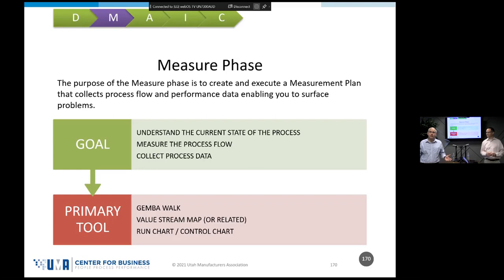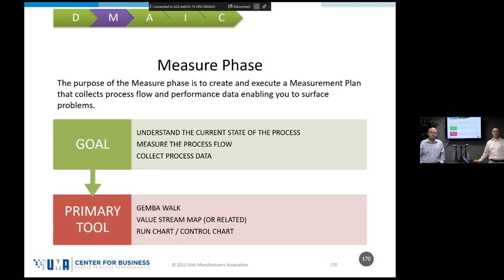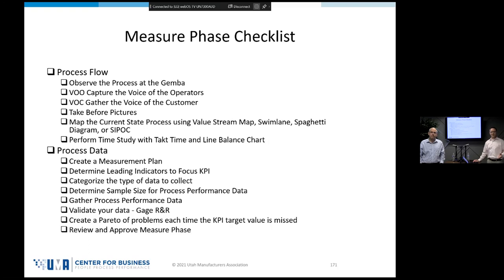We want to measure how the process flows and collect any data we can about that process — any variables and metrics. This is not the time to be nice on the process — we need to understand not what we think it is or what it should be, but what it actually is. There's no substitute for going and actually seeing what's going on. We're going to use a Gemba walk, value stream mapping, and run charts or control charts for our data as the primary tools today.